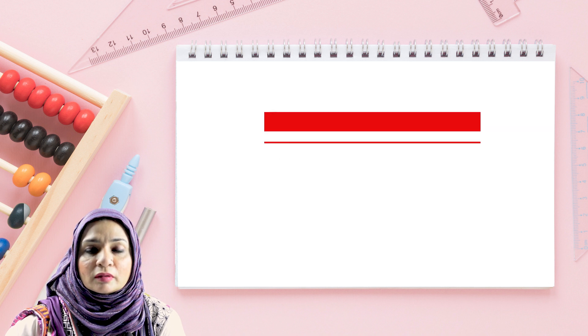As we know, proportion is divided into two parts: direct and inverse proportion. But when are the two quantities in direct and inverse proportion? For that, we need to look at some real-life examples.